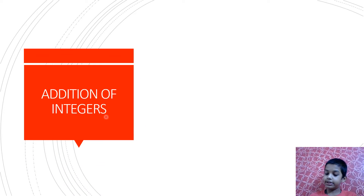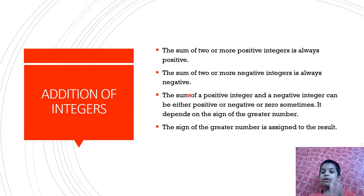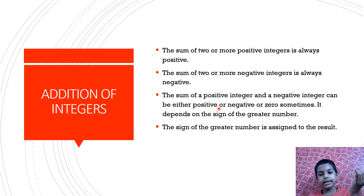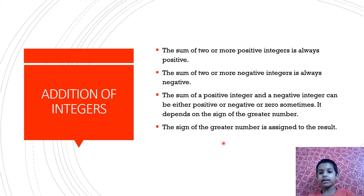Addition of integers. The sum of two or more positive integers is always positive. The sum of two or more negative integers is always negative. The sum of a positive integer and a negative integer can depend on the sign of the greater number. It can be positive, negative, or sometimes zero. The sign of the greater number is assigned to the result.